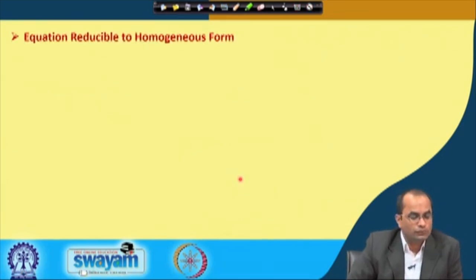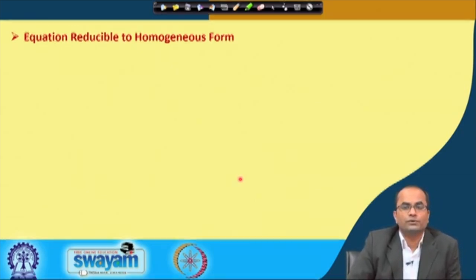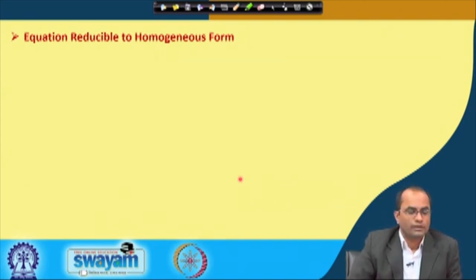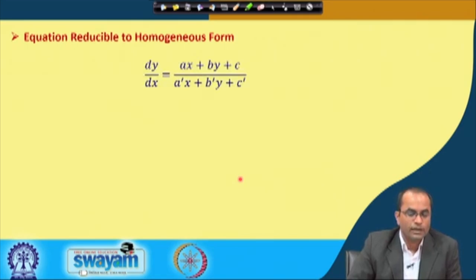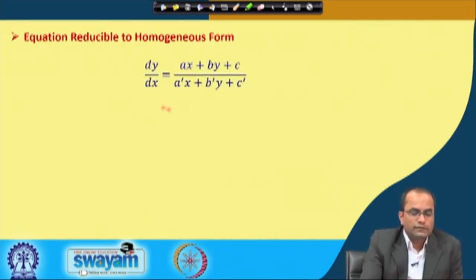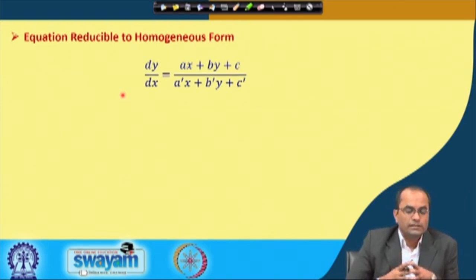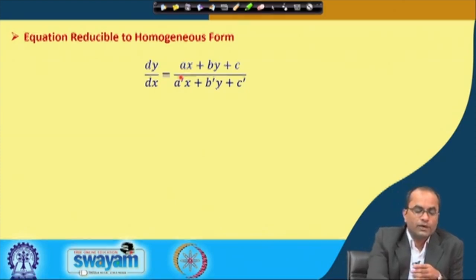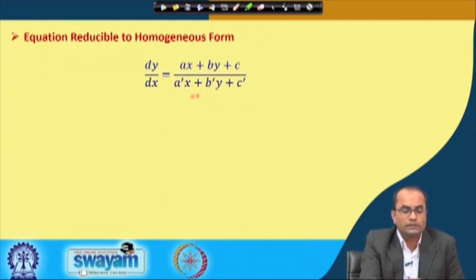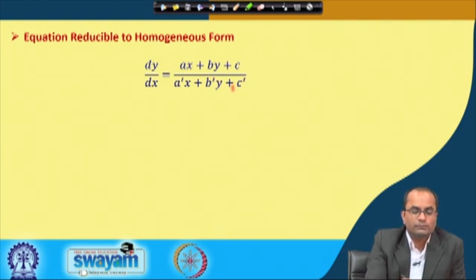The last topic for this lecture covers equations which can be reduced to homogeneous form. The given equation may not be directly homogeneous, but by some substitution it can be reduced to homogeneous form. The equation in question is dy/dx = (ax + by + c)/(a'x + b'y + c'), where a', b', c' are just new names for the constants — not derivatives.